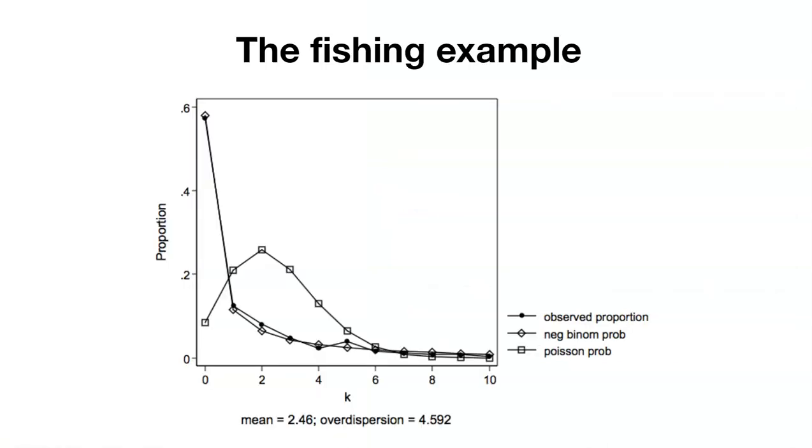I wanted to show you what it looks like looking at these different distributions, the Poisson and the negative binomial. You can see in the Poisson probability this graph here in the squares. It thinks that most of the fish were being caught were around two. It thinks that on average each group caught two fish.